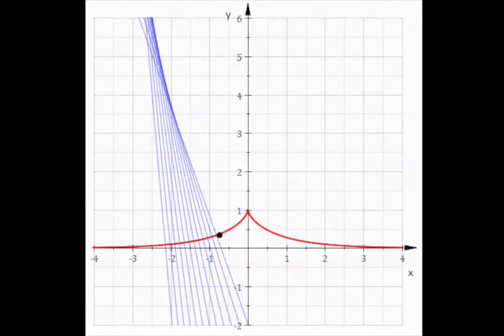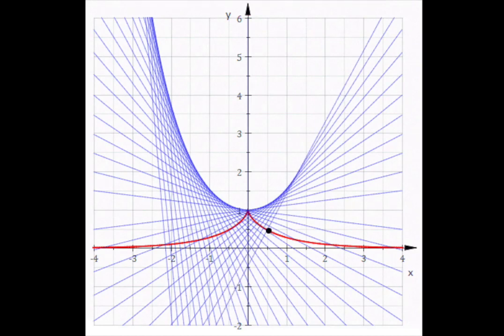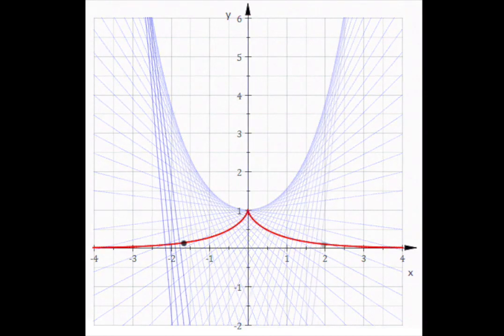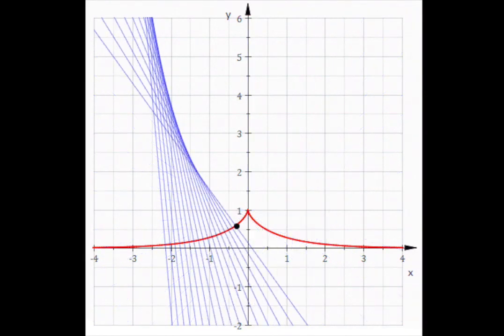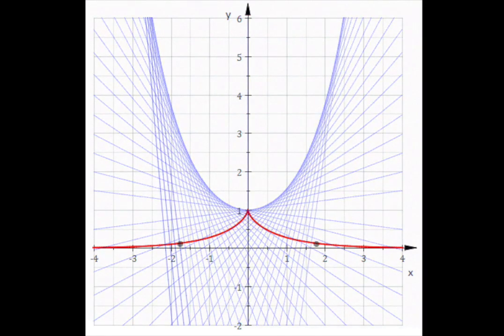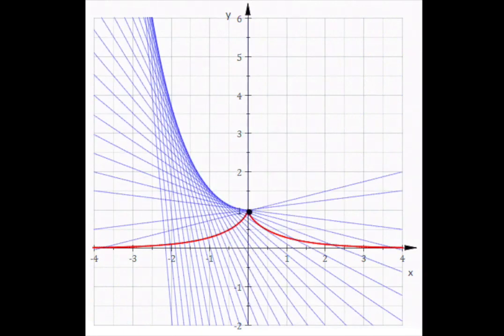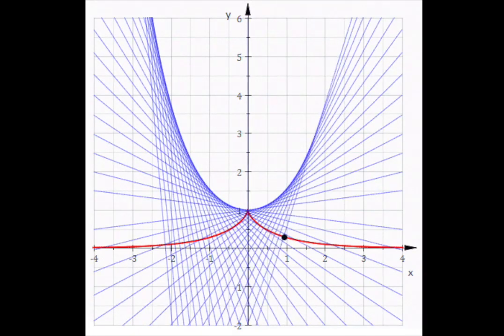The Tractrix can also be found by taking the involute of a catenary. Imagine a horizontal bar held at the vertex of the catenary and the point of contact marked as P. When the bar is rolled against the catenary without slipping, the path of P is a Tractrix.